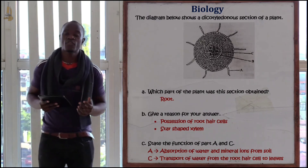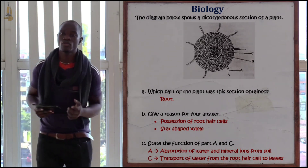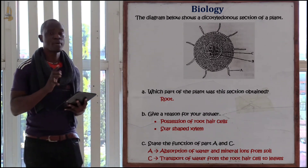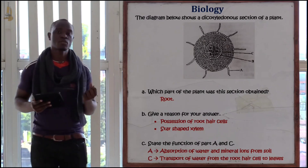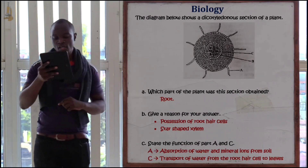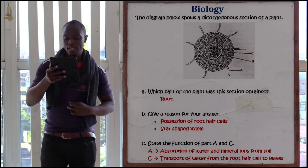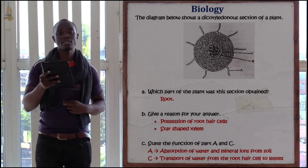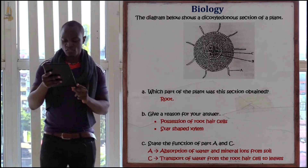The part labeled C is the xylem. The function of the xylem is transportation of water and mineral salts from the roots to the leaves of the plant. So, the function of part labeled A (root hair cell) is absorption of water and mineral salts, and part labeled C (xylem) is transportation of water from the roots to the leaves of the plant.